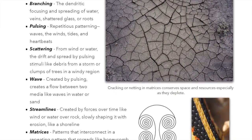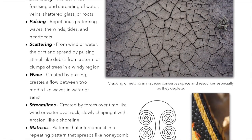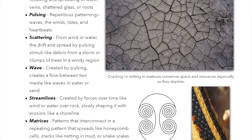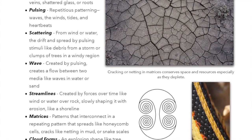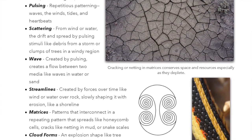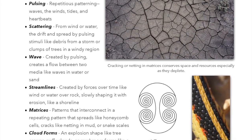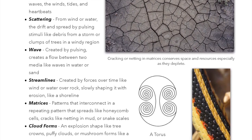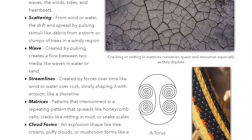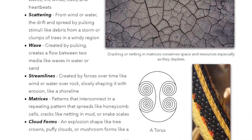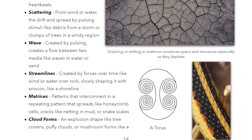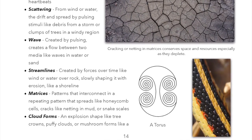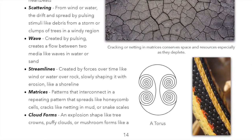Wave: created by pulsing, it creates a flow between two media like waves in water or sand. Streamlines: created by forces over time like wind or water over rock, slowly shaping it with erosion like a shoreline. Matrices: patterns that interconnect in a repeating pattern that spreads like honeycomb cells, cracks like netting in mud, or snake scales.